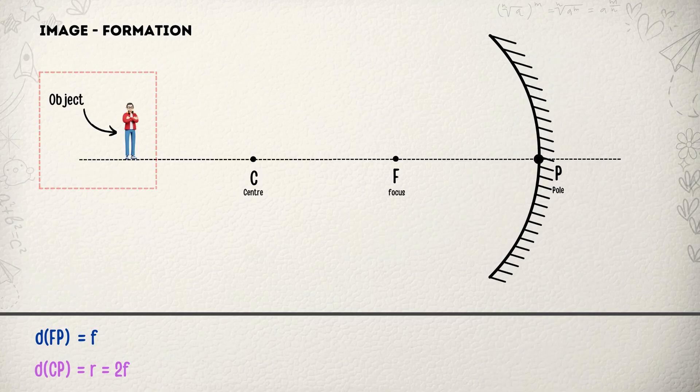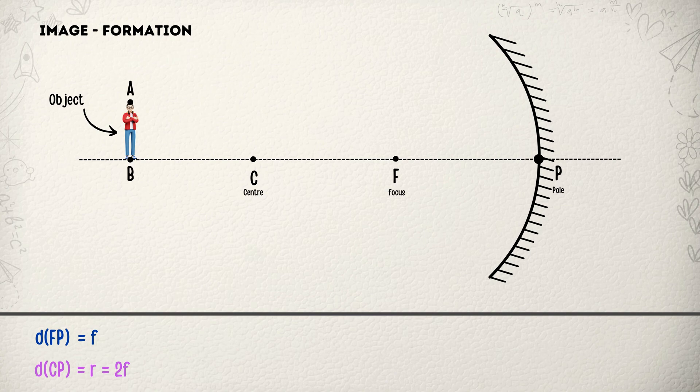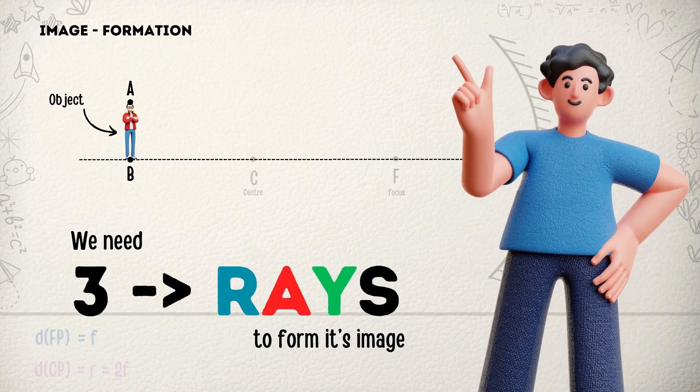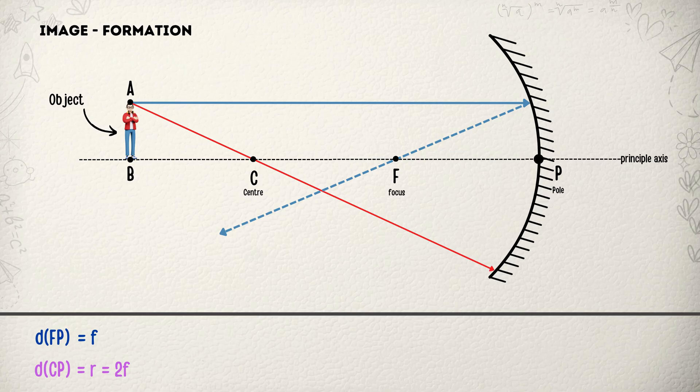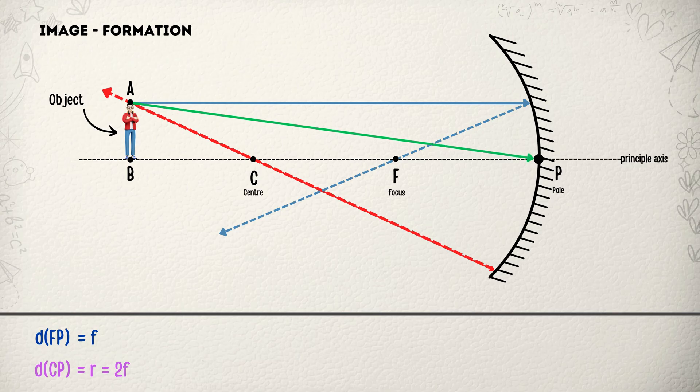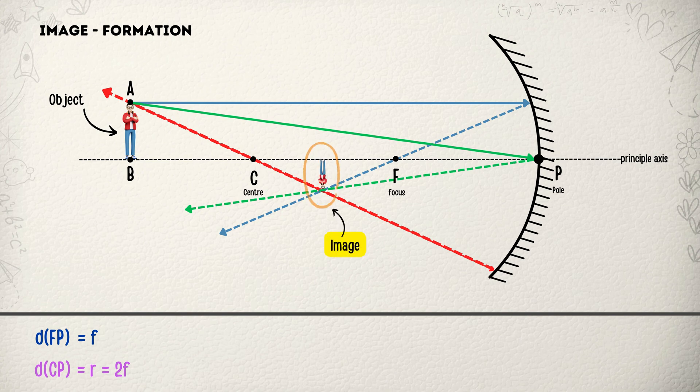Right now, we will take one object and try to form its image. We will name this object as object AB. It will require 3 rays to form its image. First ray travels parallel to principal axis and after reflection goes through focus. Second ray travels through center and after reflection returns on the same path. And finally, third ray directly hits the pole and reflects back from the pole. The point where these 3 rays intersect is where our image is formed, which we will call A'B'.